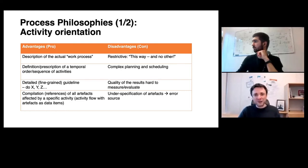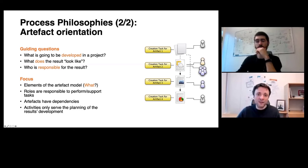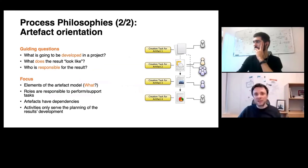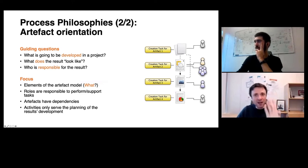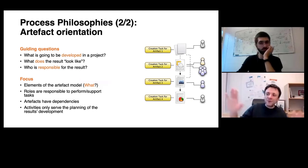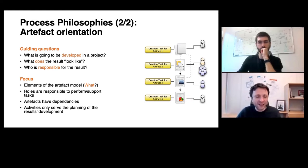This brings us to artifact orientation, built around the simple idea that the backbone of my software process model is defined by a set of interconnected artifacts. Instead of saying how to do things, I define which work products I need to deliver and how they are related to each other. Based on this central artifact model, I can define roles, responsibilities, and associate tasks necessary to create these artifacts or run quality assurance.